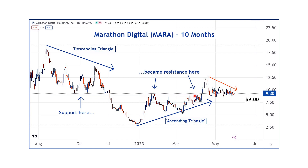So if you have enough remorseful buyers placing sell orders at a level that was support, support can convert into resistance. Now, why would resistance convert into support? Well, this is the opposite — this is seller's remorse. People sold, and when the price moves higher, a lot of investors who sold regret doing so. They tell themselves, I made a mistake. I'm going to buy my shares back, but I'm only going to do so if I can get them for the same price I sold them at. So if you have enough remorseful sellers placing buy orders at the level that was resistance, resistance can convert into support.